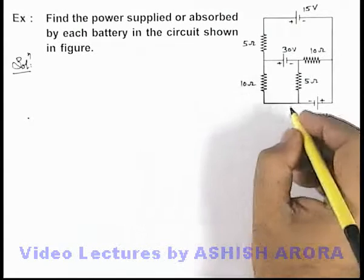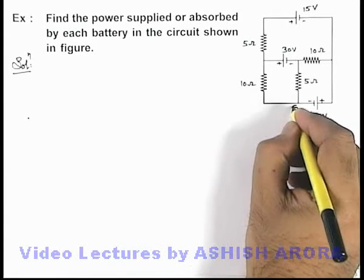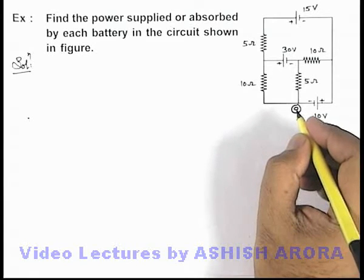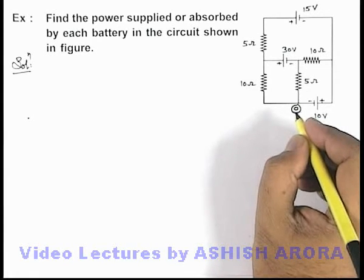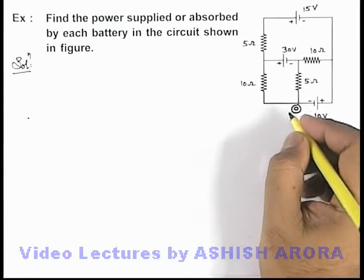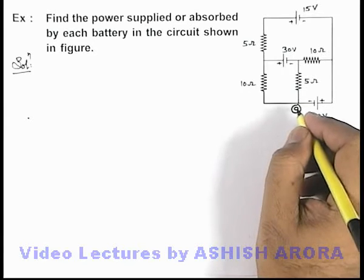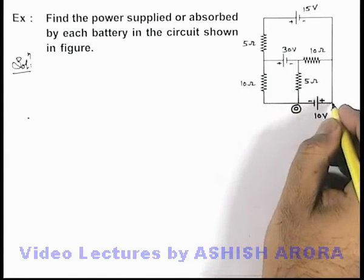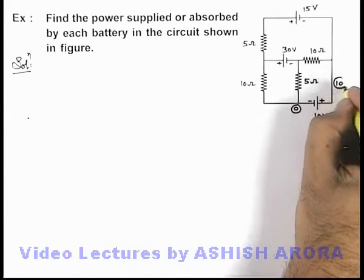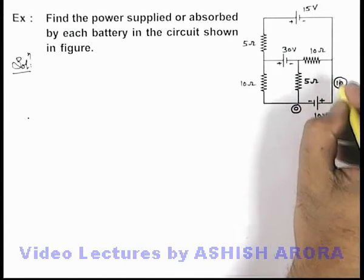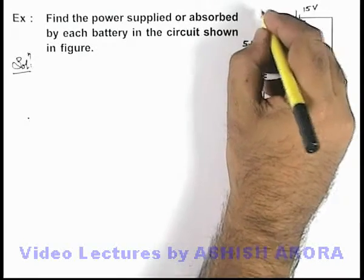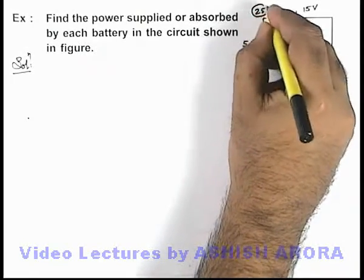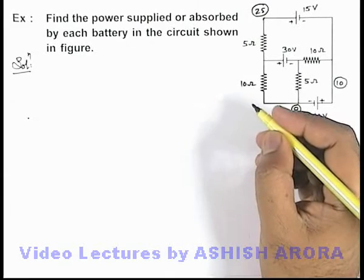Here let us consider the potential at this point to be zero volts, because in applying Kirchhoff's Current Law we need to distribute the potentials. So if we take this potential to be zero, on the other side the potential will be 10 volts, and if here it is 10, at this terminal the potential can be taken as 25 volts.